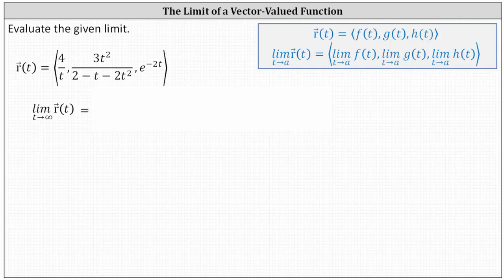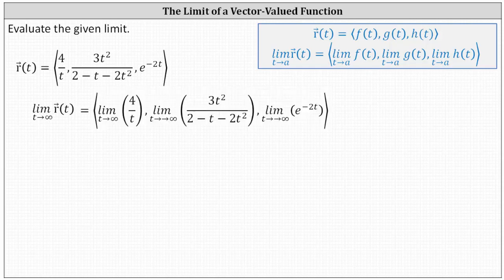We're given the vector-valued function r of t and asked to determine the limit as t approaches infinity of the vector-valued function r of t. To do this, we determine the limit as t approaches infinity of the three components of the vector-valued function, and now we consider each of the three limits.